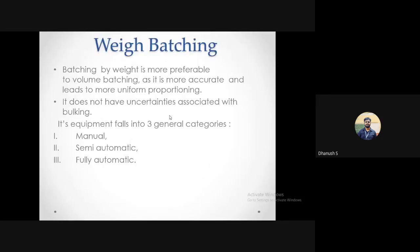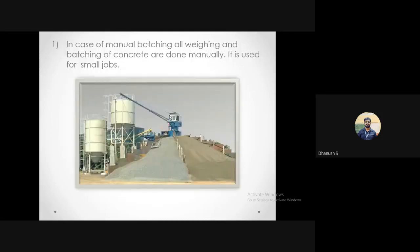Weight batching is more scientific and accurate. For example, even if you add a slight amount of water into sand and the volume increases, the weight remains the same. So always adopt weight batching. Under weight batching, we can classify into three types based on how you measure: manual, semi-automatic, and fully automatic.